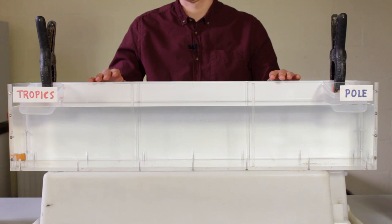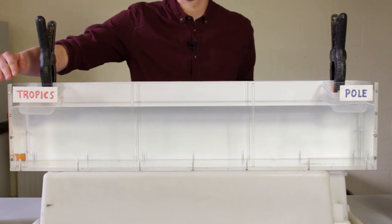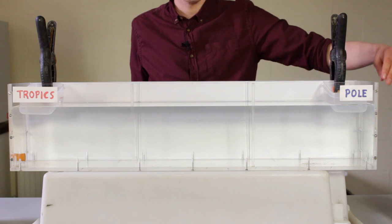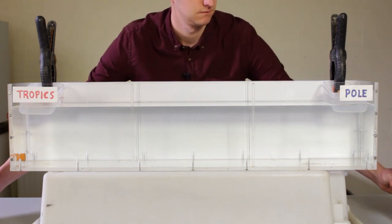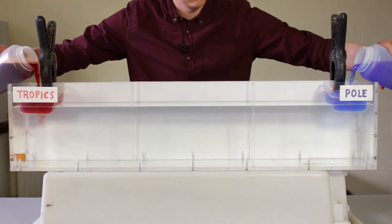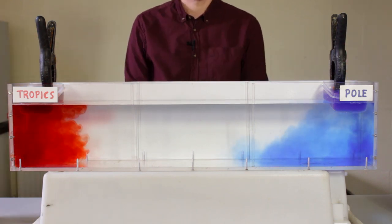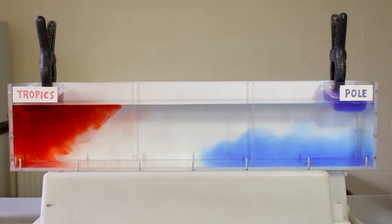Let's pretend this tank is the world's ocean. At the tropics, the water is warmed by the sun. At the North Pole, the water is cooled by the ice caps. But when we add dye to each end, the warm tropical water flows to the pole, and the cold water there sinks and flows back along the sea floor towards the tropics.